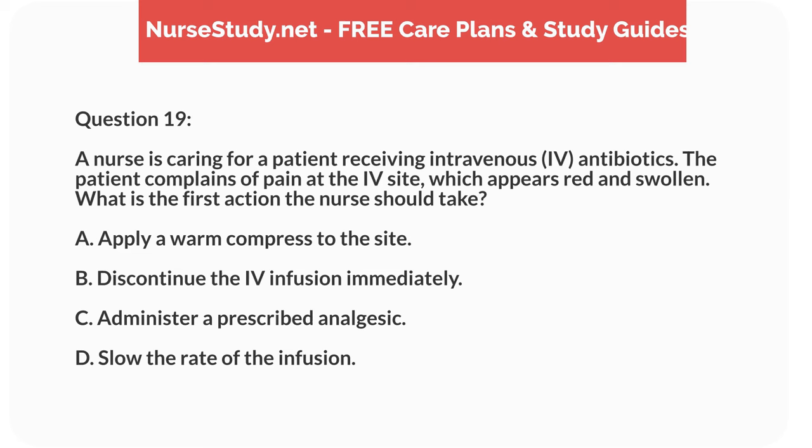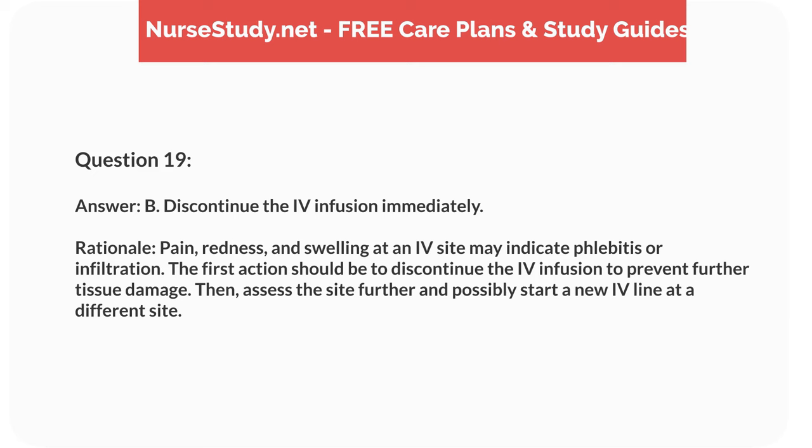Question 19. A nurse is caring for a patient receiving intravenous antibiotics. The patient complains of pain at the intravenous site, which appears red and swollen. What is the first action the nurse should take? A. Apply a warm compress to the site. B. Discontinue the intravenous infusion immediately. C. Administer a prescribed analgesic. D. Slow the rate of the infusion. Answer: B. Discontinue the intravenous infusion immediately. Rationale: Pain, redness, and swelling at an intravenous site may indicate phlebitis or infiltration. The first action should be to discontinue the intravenous infusion to prevent further tissue damage, then assess the site further and possibly start a new intravenous line at a different site.